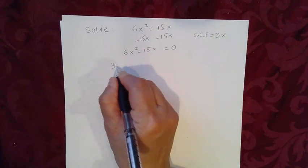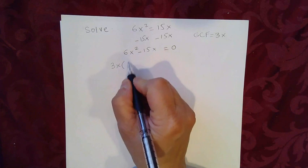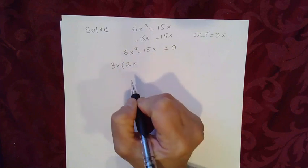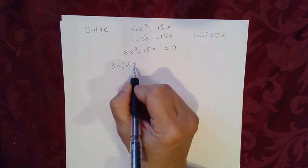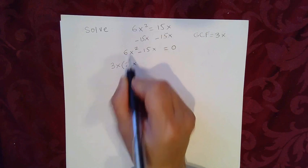Factoring out 3x, so 6x squared divided by 3 is 2x. Remember, 3x times 2x should give me 6x squared.